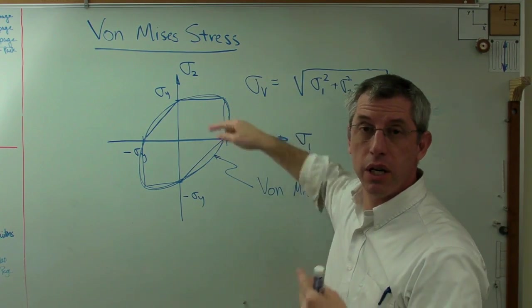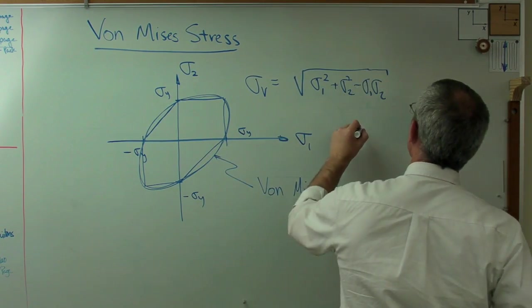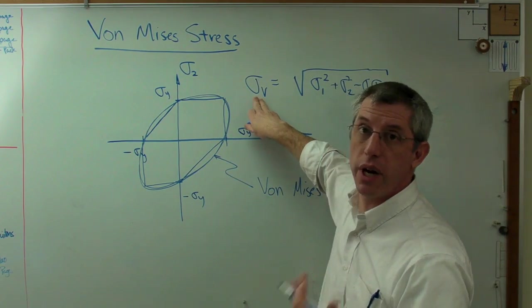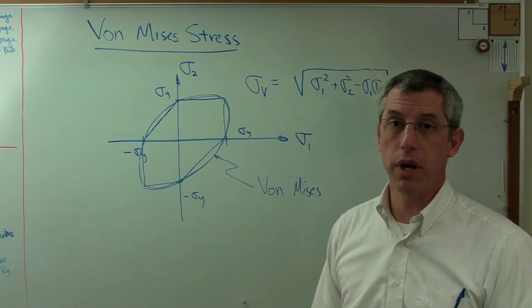If the stress you calculate, that von Mises stress, is lower than yield, then you don't experience failure. If the stress you calculate, the von Mises stress, is higher than yield, then you do predict failure.